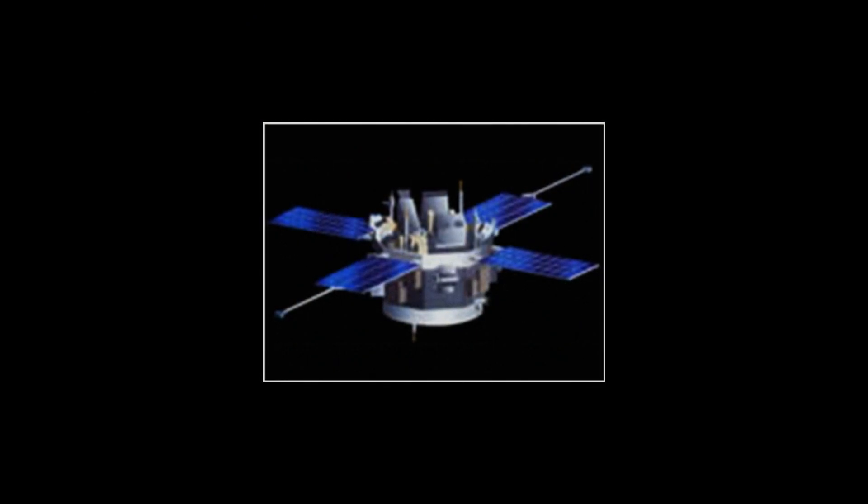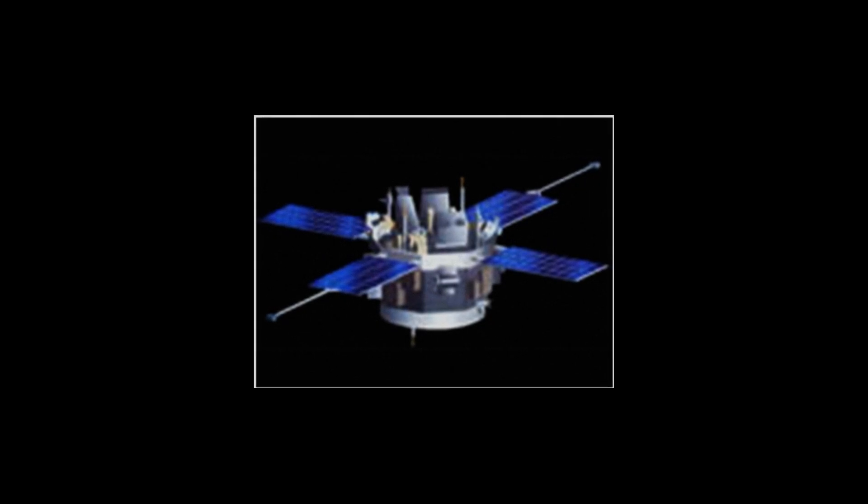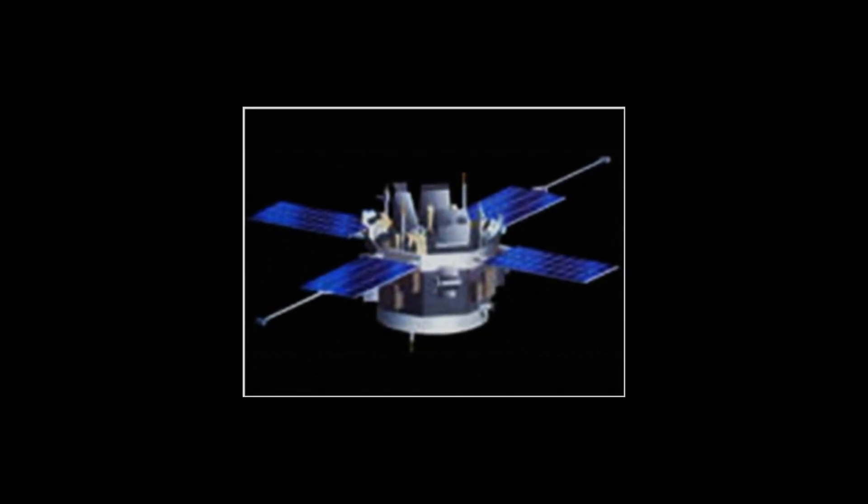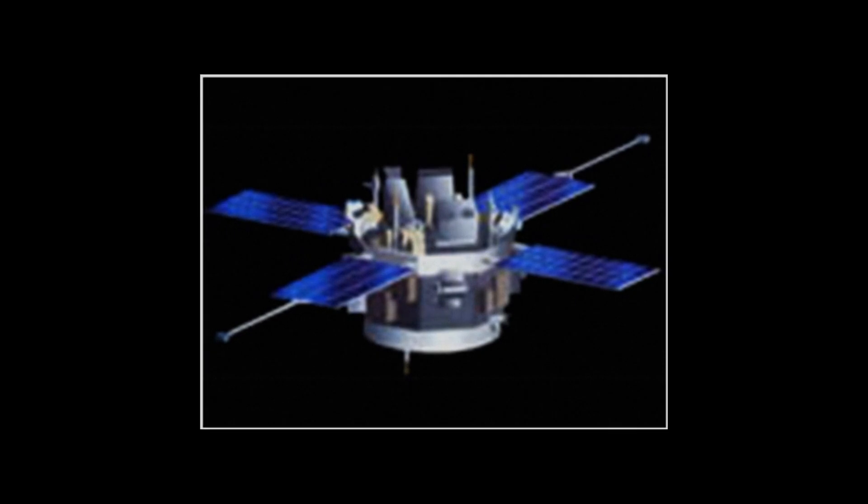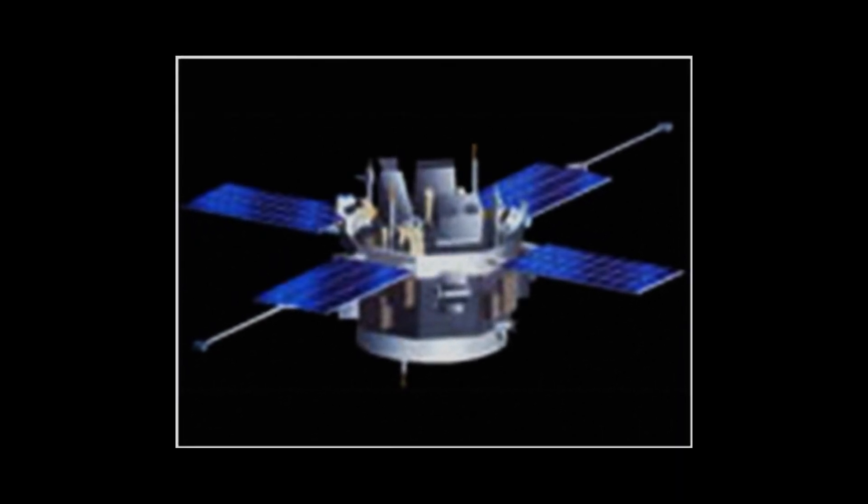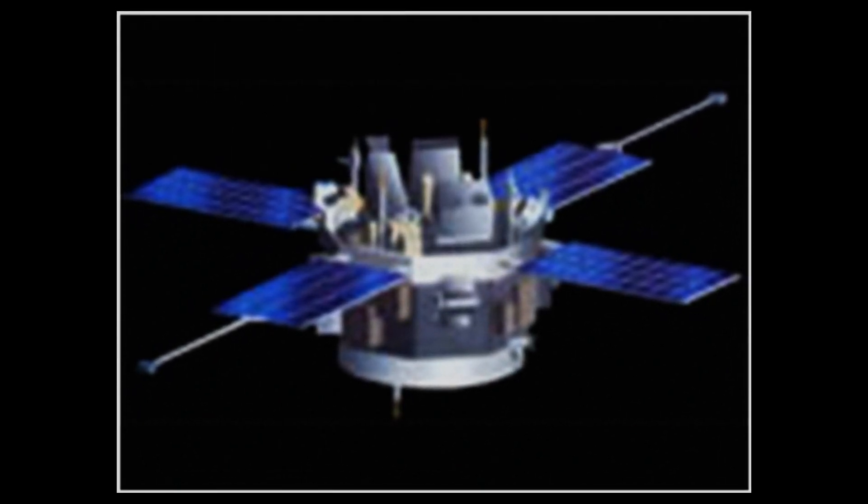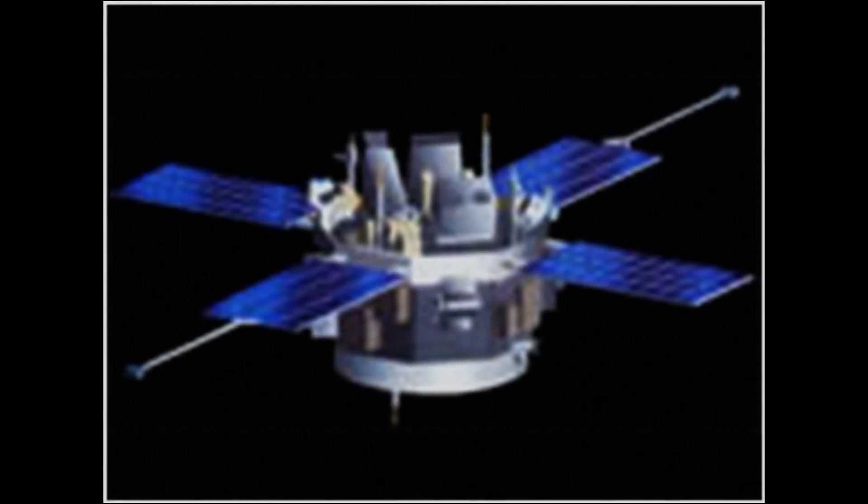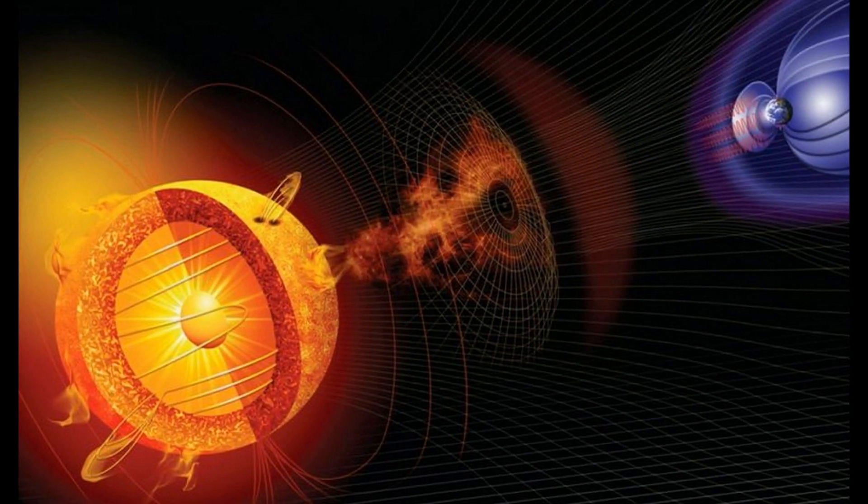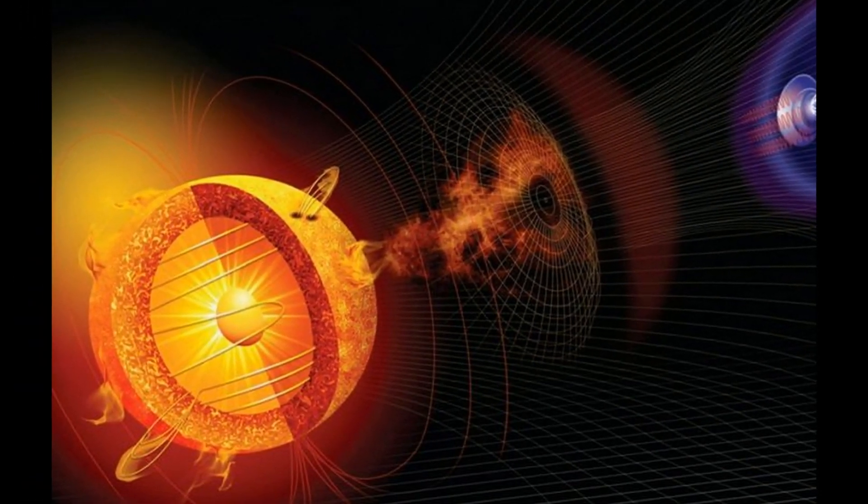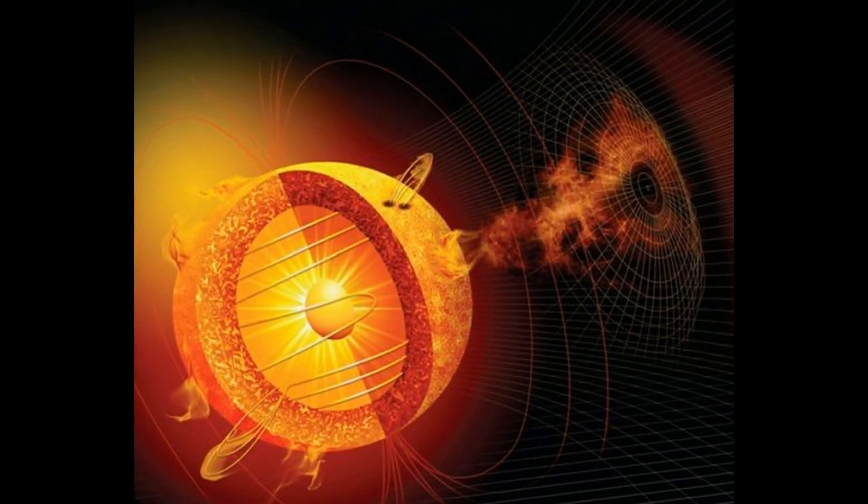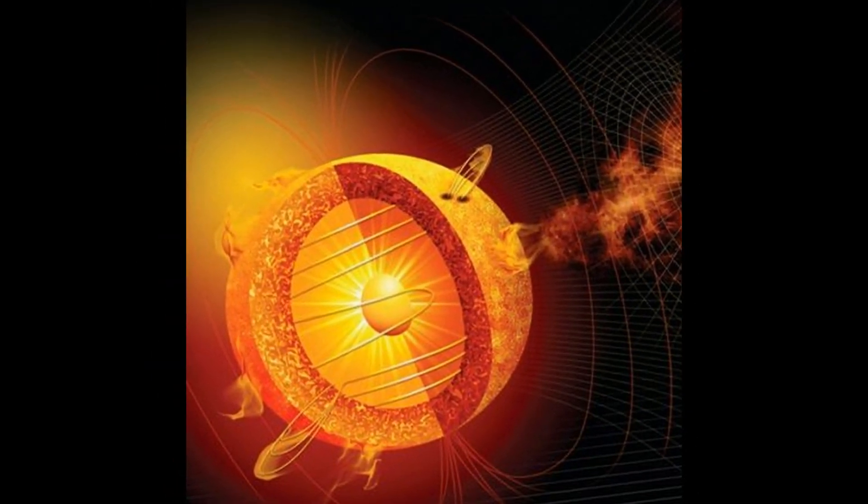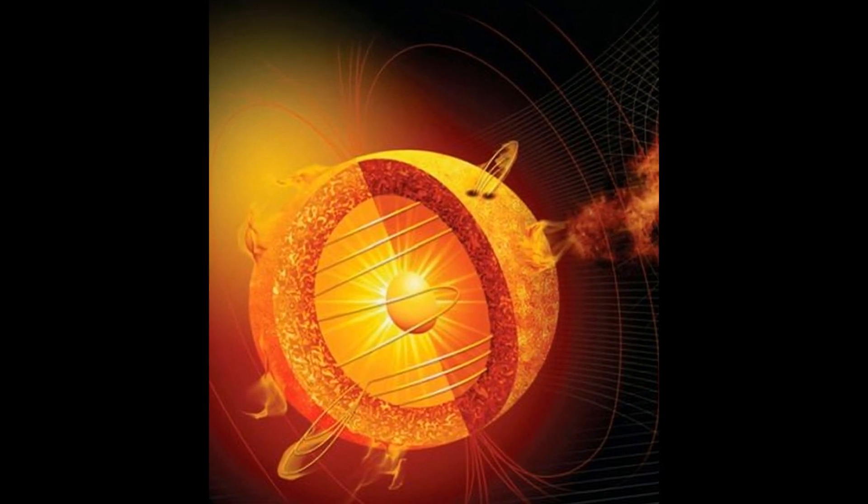Some of our current solar satellite missions include ACE, or the Advanced Composition Explorer. This spacecraft carries six high-resolution sensors and three monitoring instruments that sample low-energy particles of solar origin and high-energy galactic particles. With collecting power 10 to the 10,000 times greater than the past, this satellite works from a vantage point of one one-hundredth of the distance from the Earth to the sun. In other words, one percent of the distance from the Earth to the sun is where ACE satellite orbits around the sun.